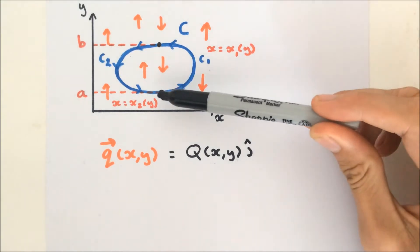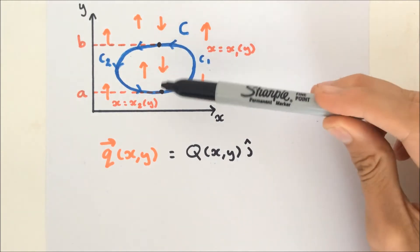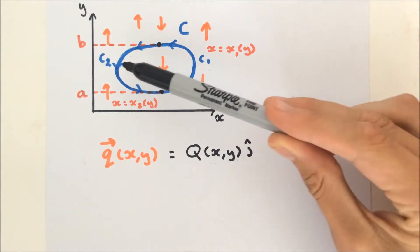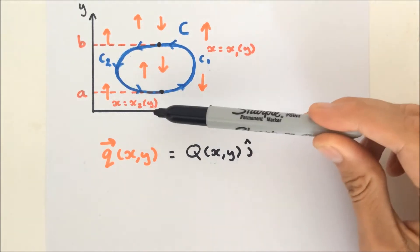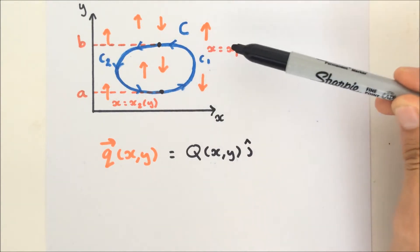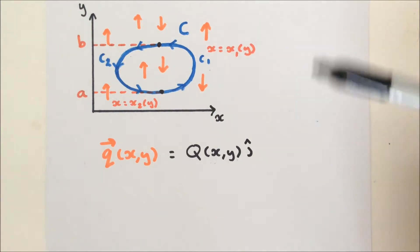So from A to B, that is C1, and from B to A, that is C2. On C2, x is equal to x2(y) and x is equal to x1(y) on C1.